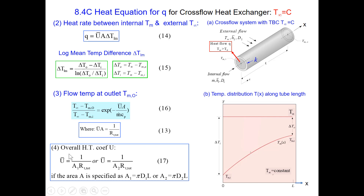Finally, if we want to get the overall heat transfer coefficient U value, equation 17 relates U-bar to 1 over A1 times RT total, or 1 over A2 times RT total. It depends upon whether the area is specified as inner tube surface area A1 or outer tube surface area A2.